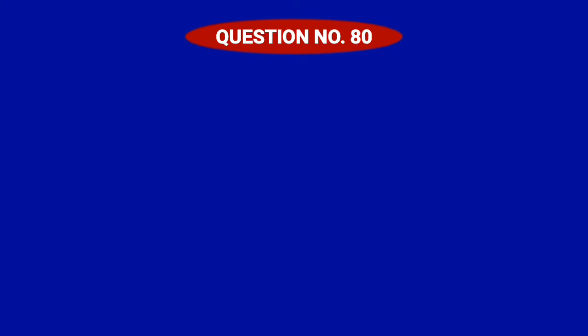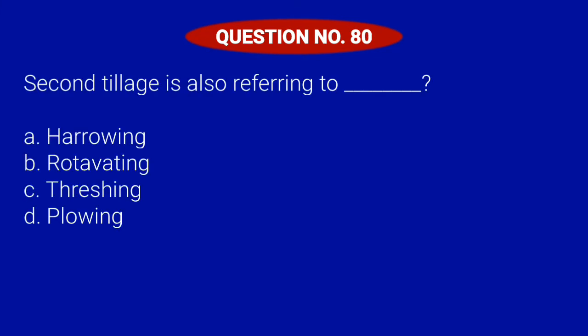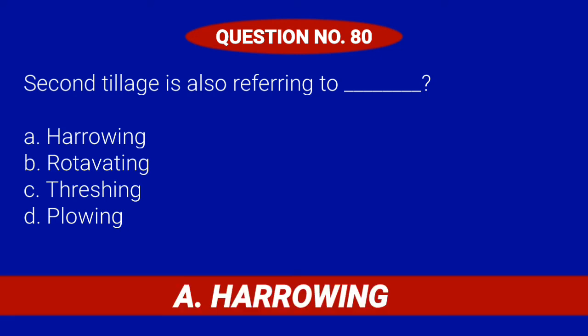Question number 80. Second tillage is also referring to blank. Letter A: Harrowing. Letter B: Rotivating. Letter C: Threshing. Or Letter D: Plowing. Correct answer is Letter A: Harrowing.